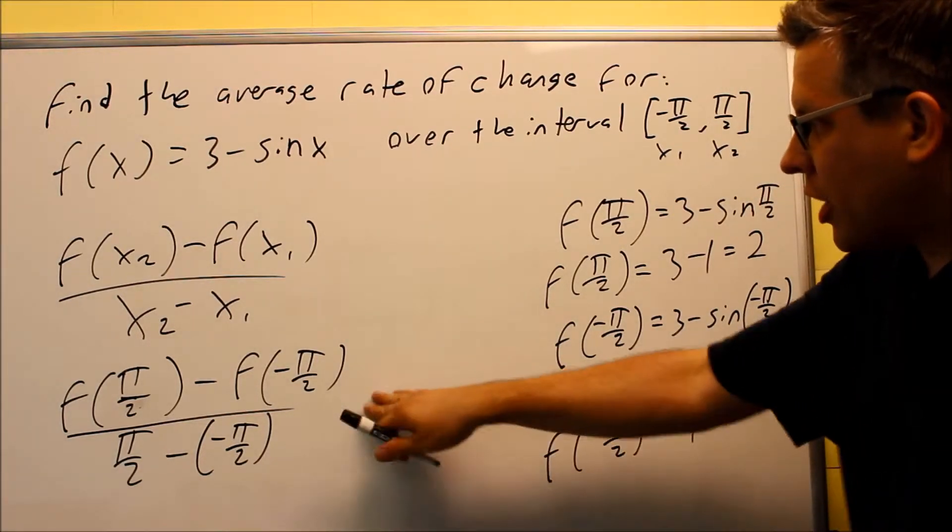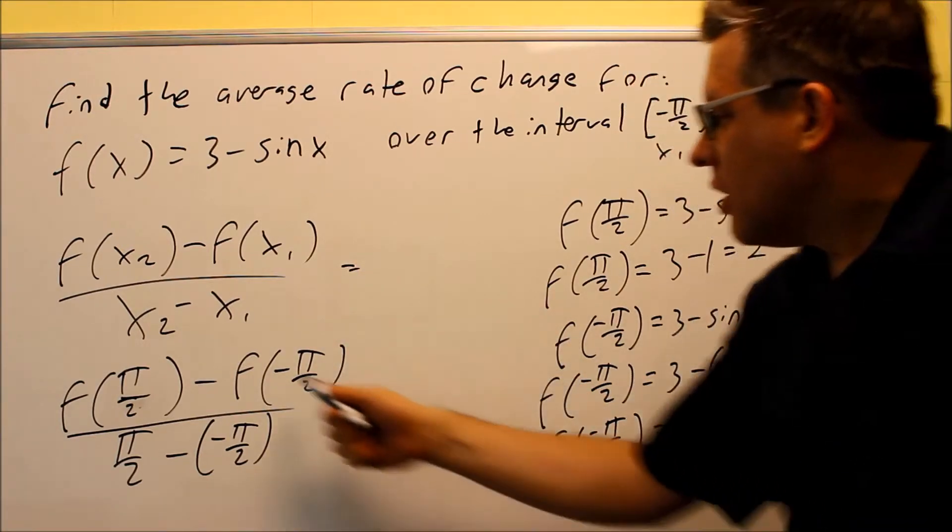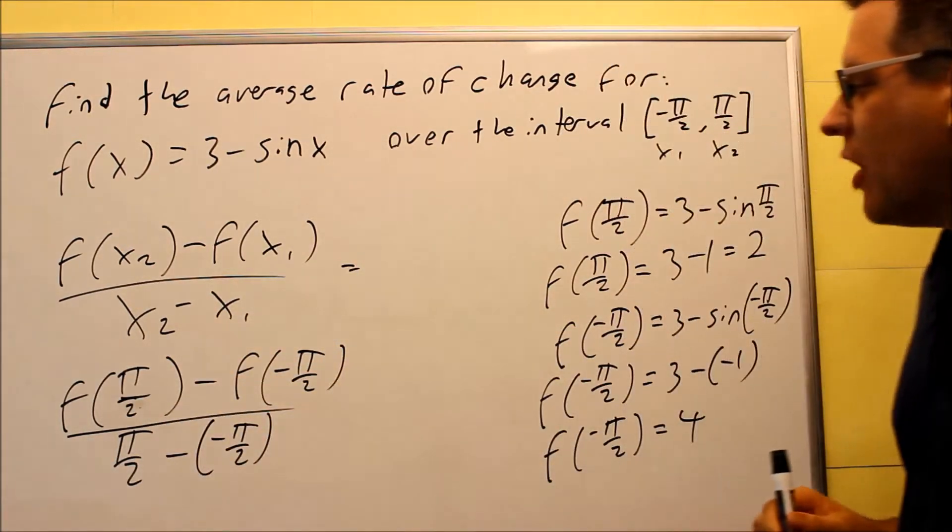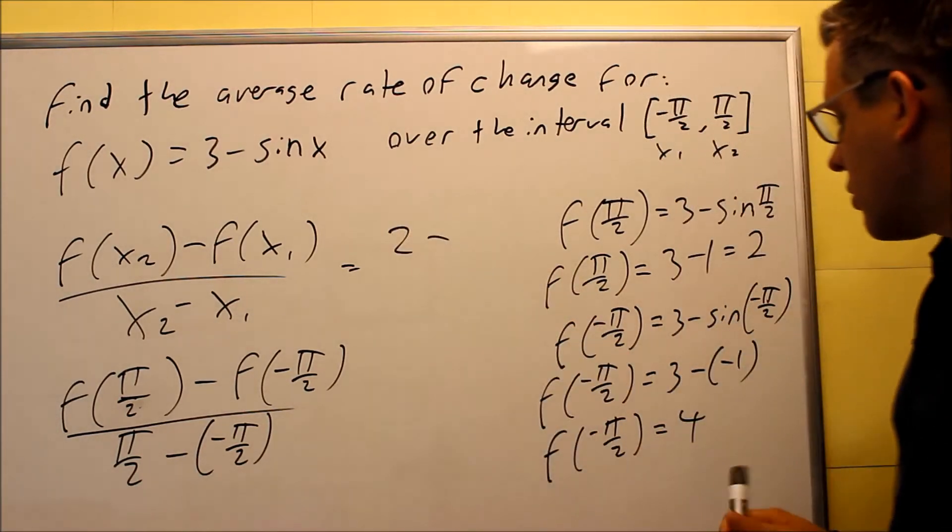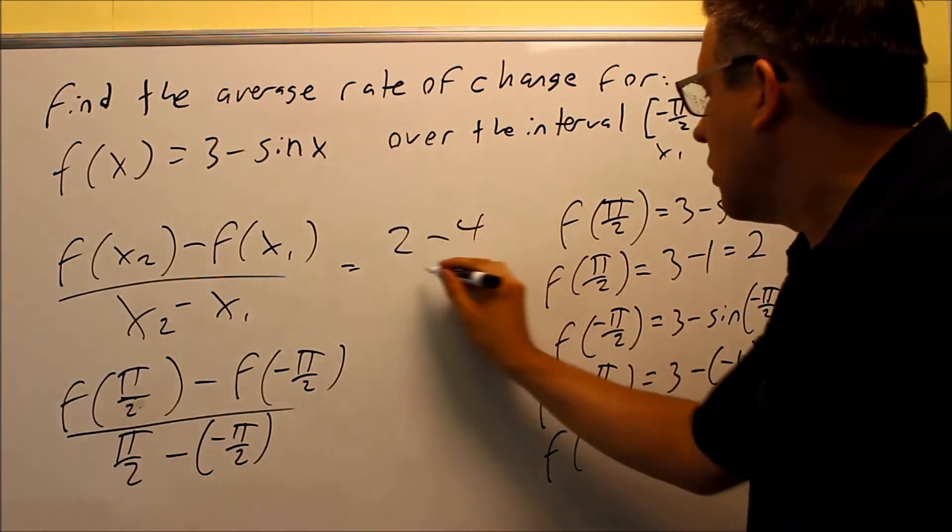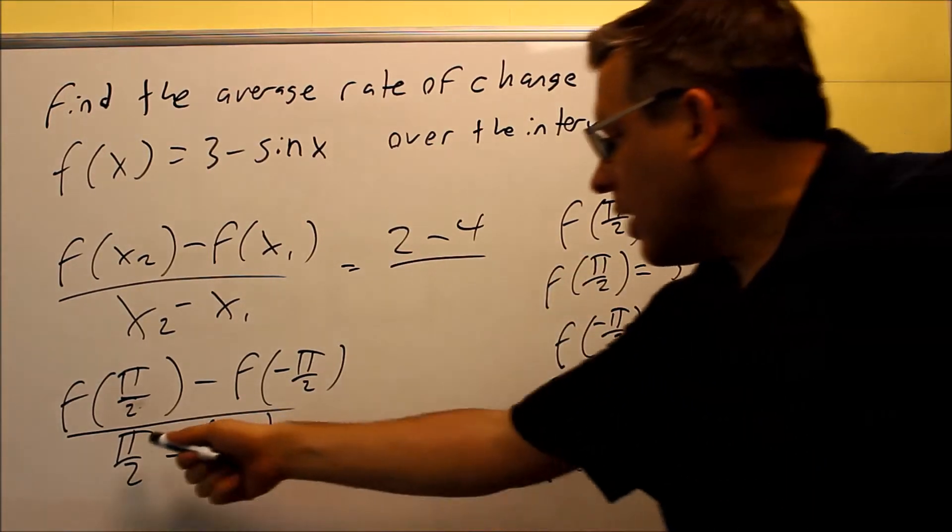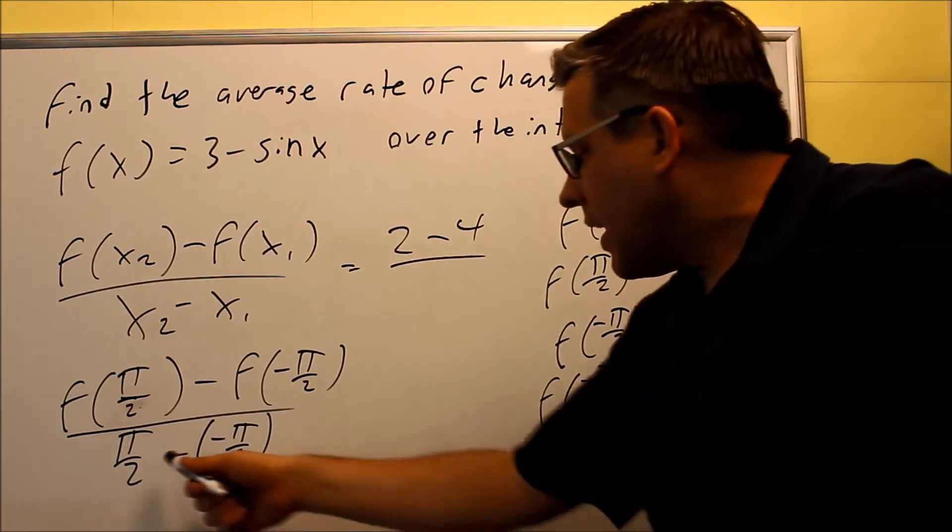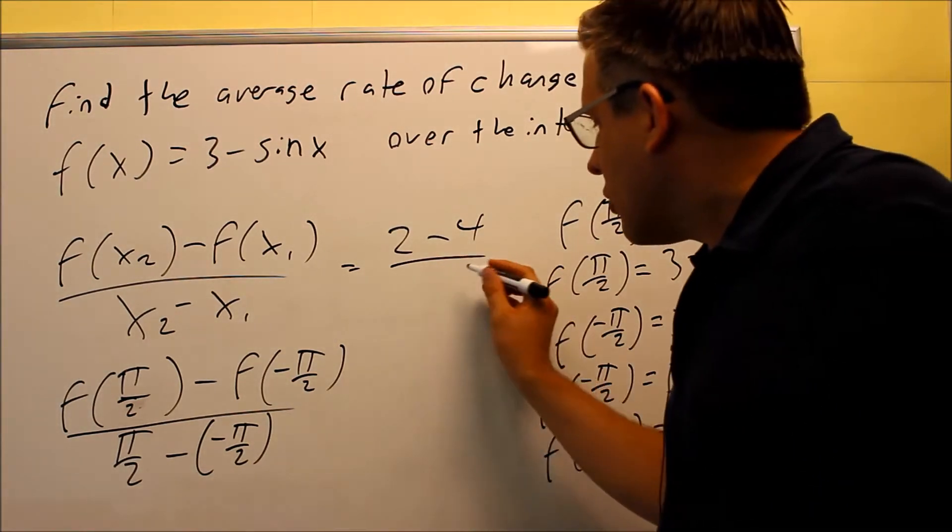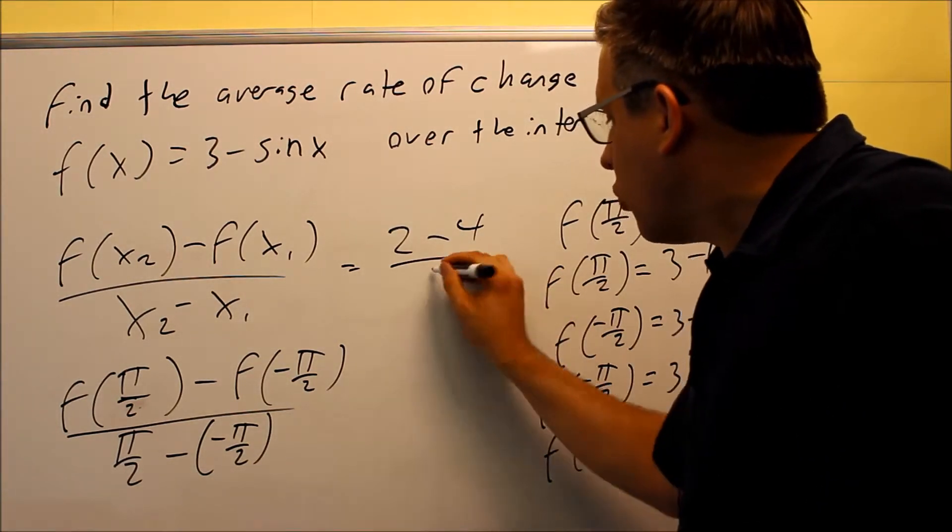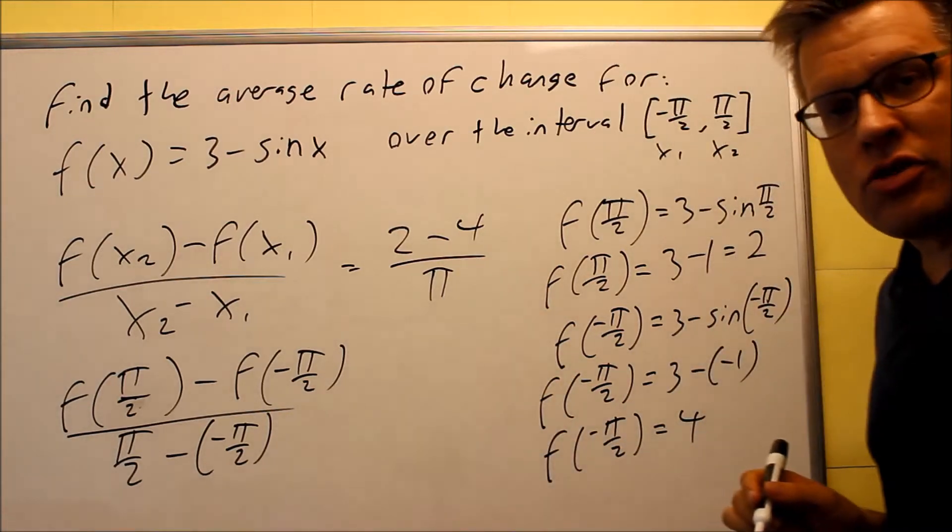When I plug everything back into this formula, we're following this. So f of pi over 2, got that. That's 2 minus 4 over, when I subtract this one, I get pi over 2 plus pi over 2. I'm going to get 2 pi over 2, which actually just simplifies down to pi.